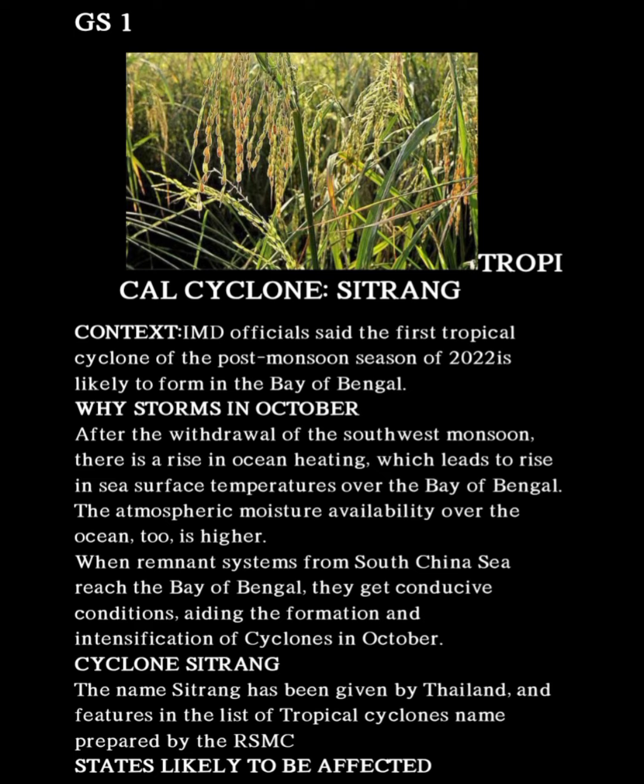The atmospheric moisture availability over the ocean too is higher. A remnant system means a tropical cyclone degenerating into a trough or wave that lacks a cyclonic circulation — that is referred to as remnants.